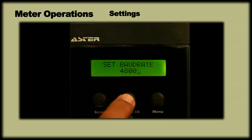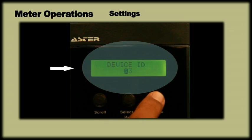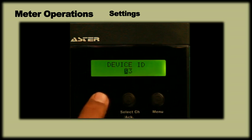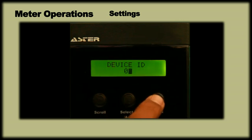Once you have selected the desired baud rate, press menu key and the display will ask for device address. Use scroll and select ch keys to set the device address to the required address. Press menu twice to save and exit.